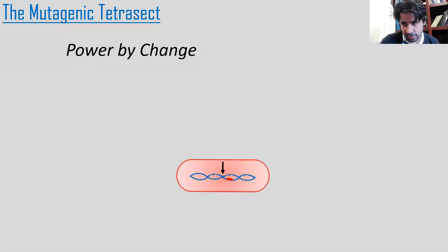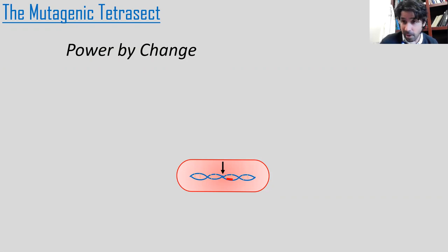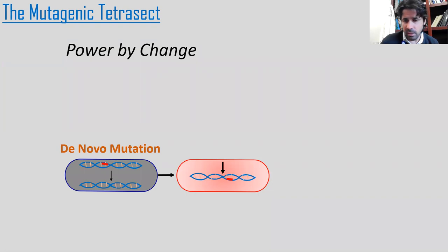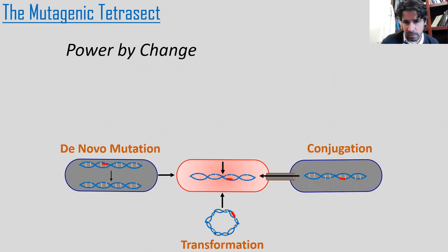I introduced this in the last video — the mutagenic tetracet — which is really the mechanism by which bacteria overcome many of the measures we throw against them, essentially powered by change. The tetracet is really four ways in which bacteria mutate: de novo mutation, transformation, conjugation, and transduction.